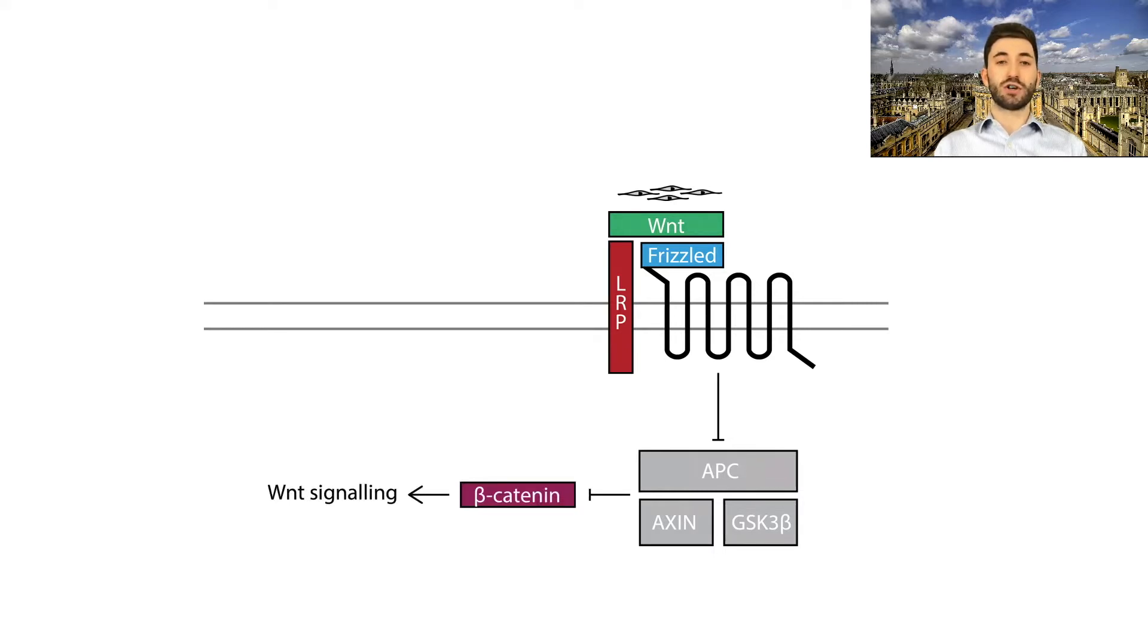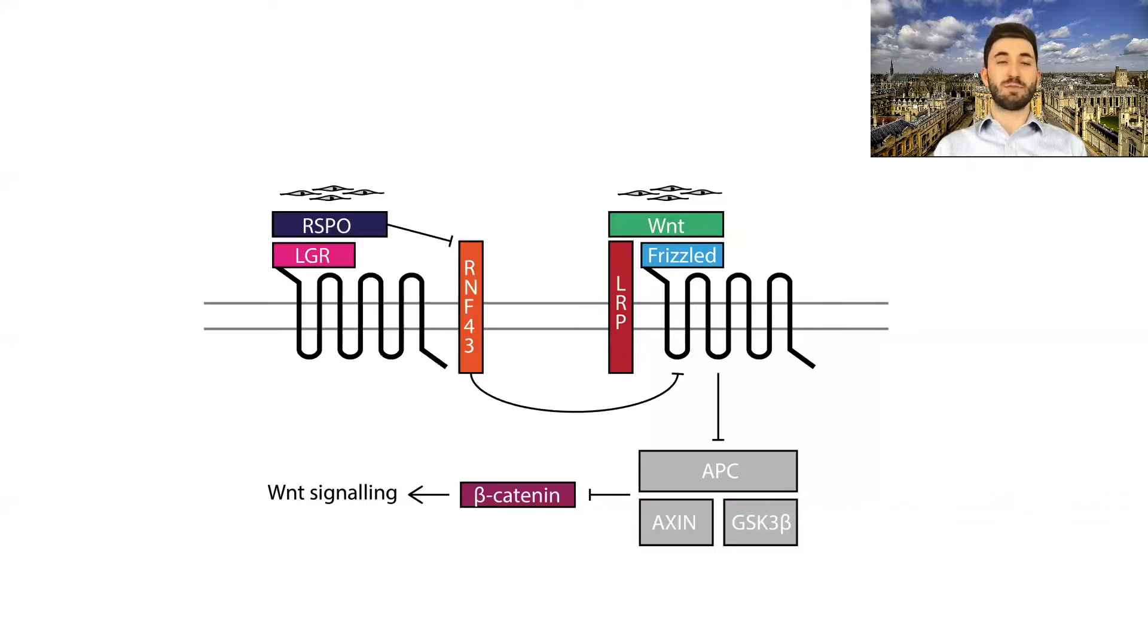However, recent work shows that for complete activation of the Wnt signaling pathway, R-spondin ligands must bind to LGR family receptors to inhibit RnF43 and thus disinhibit frizzled receptors.